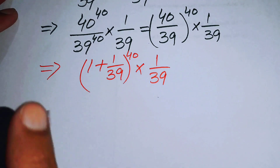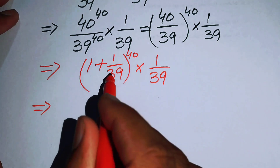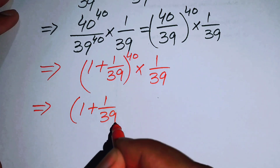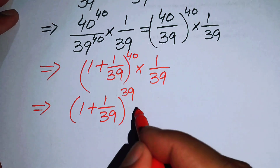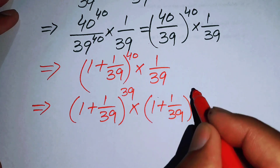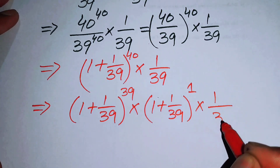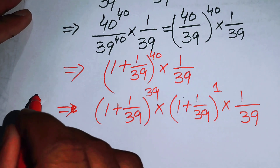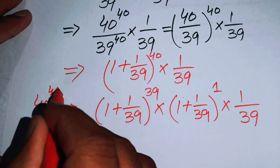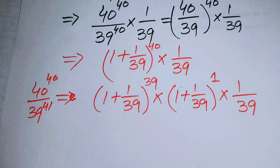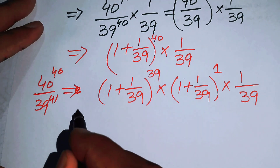Breaking the exponent, I get (1 plus 1 over 39) to the power of 39, multiplied by (1 plus 1 over 39) to the power of 1, times 1 over 39. This expression equals 40 to the power of 40 over 39 to the power of 41. Now I apply the limit law.